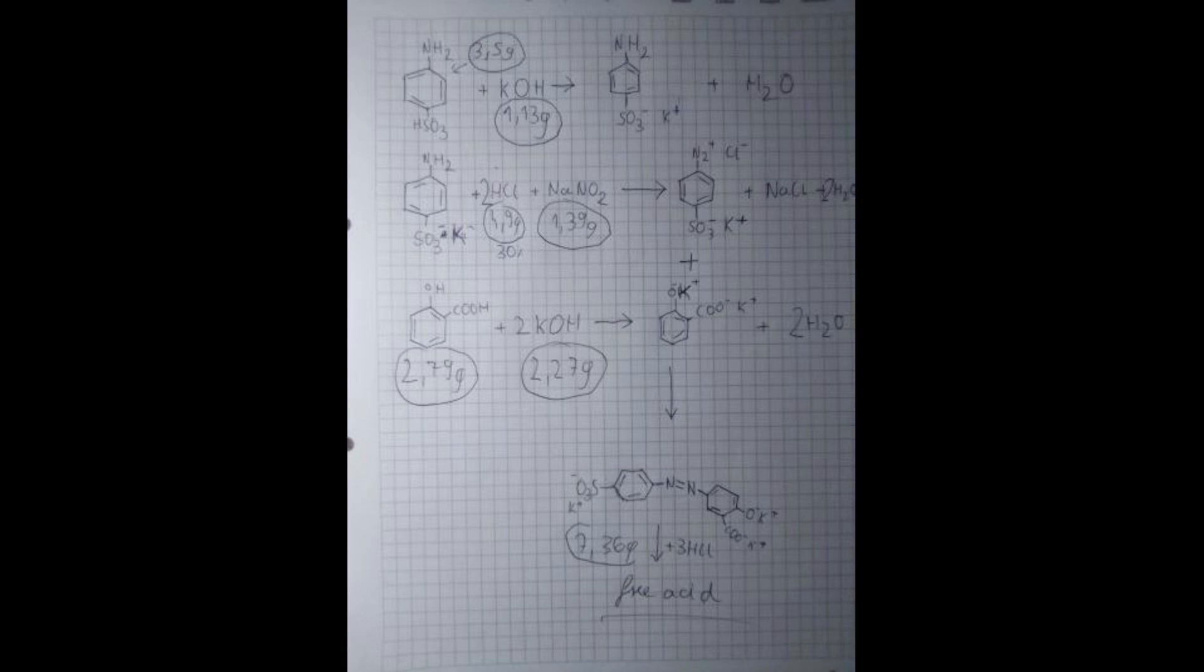The next step is going to be the azotization of the sulfanilic acid potassium salt, and for this we're going to need hydrochloric acid and sodium nitrite. This is going to give us our diazonium salt. Another step is the neutralization of our salicylic acid with also potassium hydroxide. Then we are going to be azo coupling the potassium salt of salicylic acid and the diazonium salt to produce our dye, which is going to be in the potassium salt form. We're going to precipitate out the free acid with hydrochloric acid.